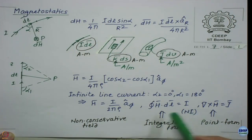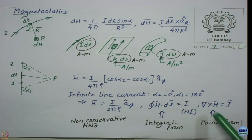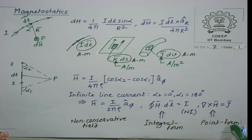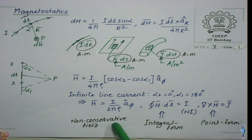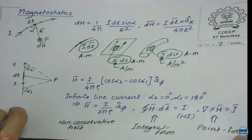An infinite line charge gives E = Q / (2π·ε₀·R·L), again a 1/R dependence. Del cross H equals J is the point form of Ampere's law, and the integral H·dL = I is the integral form of the same equation. Since del cross H is in general non-zero, H is a non-conservative field. We have seen earlier the difference between conservative and non-conservative fields - this is an example of a non-conservative field.